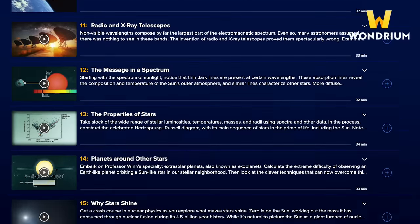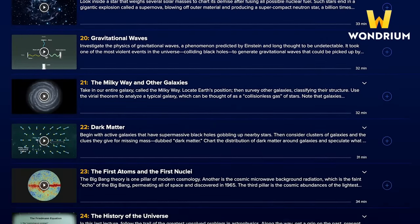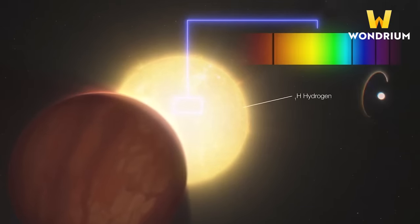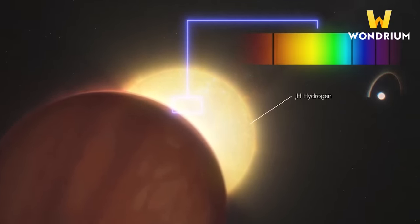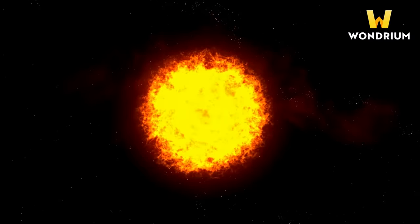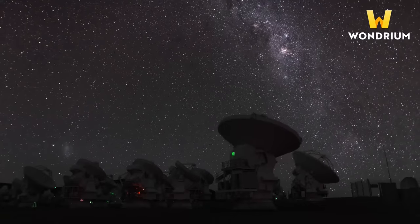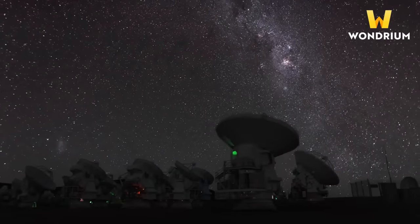The 24-episode series touches on all major topics in astronomy and astrophysics. You'll learn what secrets are hidden in the spectrum of celestial objects, what happened in the first few minutes of the universe, what happens when stars grow old, the basics of radio and x-ray telescopes, and much more.